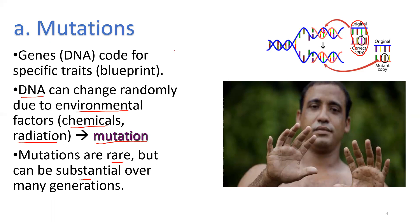Mutations are rare, but can be substantial over many generations. Mutations that are beneficial could be things like skin color — having more melanin in your skin would be a beneficial mutation if you happen to be born in equatorial regions where there's a lot of intense UV radiation. If you're born with a mutation for light skin, that is beneficial in northern climes because it maximizes incoming solar radiation and you can make vitamin D. When we talk about mutation, we usually have a negative connotation — many mutations are bad, and if they survive in the gene pool they can lead to diseases. But they are the original source of variation — slight changes in your DNA.